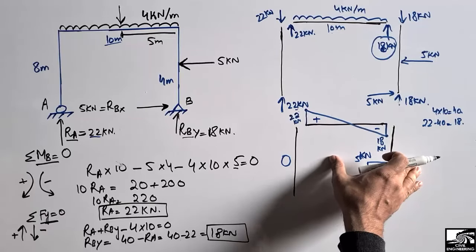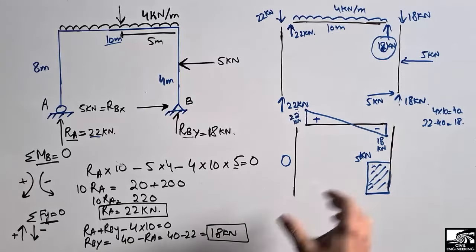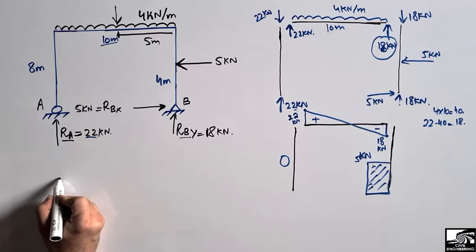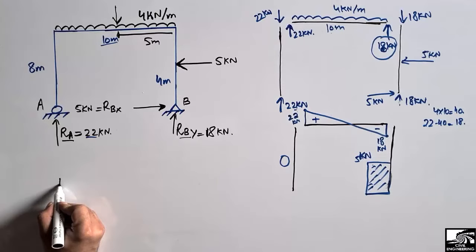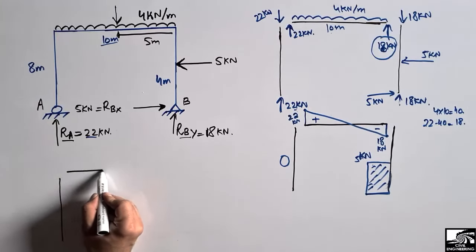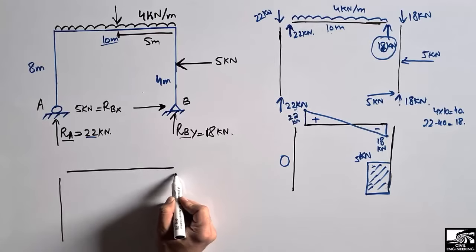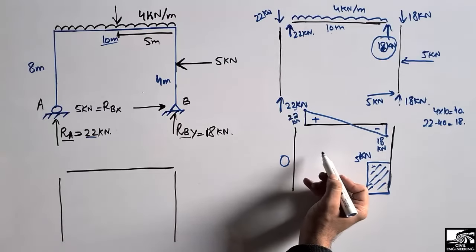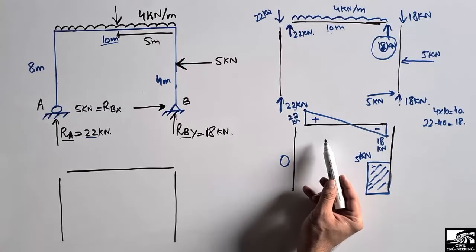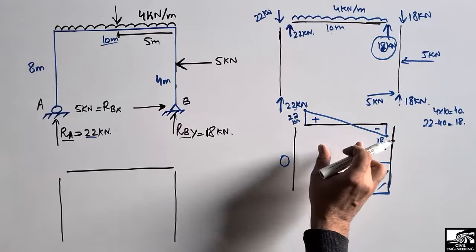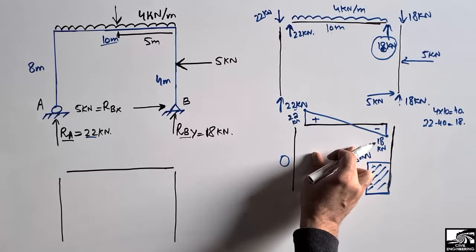To draw the bending moment diagram, we draw reference lines for the columns and beam. We take help from the shear force diagram by calculating the areas of the shear force boxes. The area of each shear force region gives the corresponding change in bending moment.